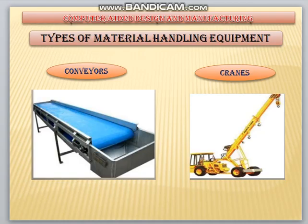In this video, let us see the types of material handling equipment. The first one is conveyors. Conveyors are used to move material in a fixed path frequently. Various types of material in a single path can be moved, and a number of materials can also be moved in this single path.